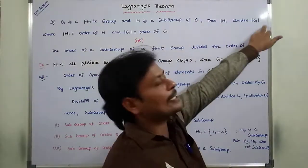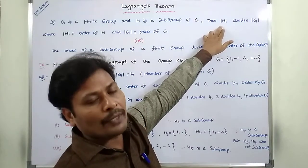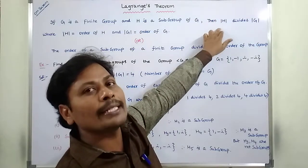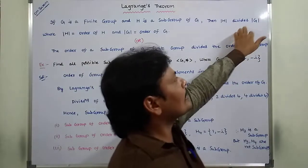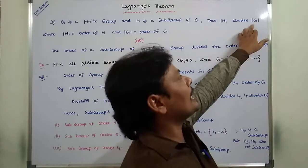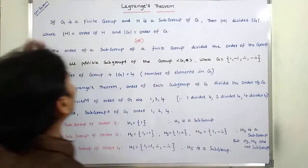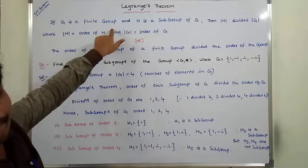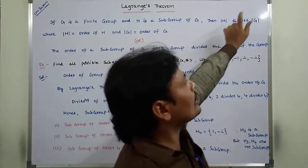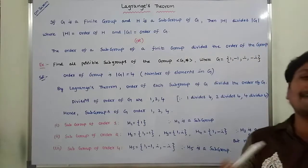Then mod H divides mod G. Here, mod H is nothing but the order of H. Order of H is nothing but the number of elements in H. It divides mod G, which is nothing but order of G. Order of G is nothing but the number of elements in group G. So, order of H divides order of G.